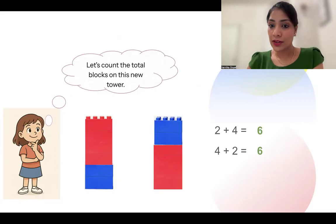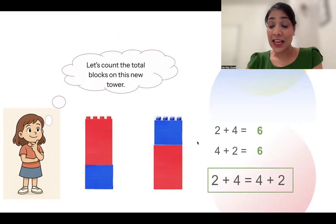What do we see here? That the total sum is the same. That means switching the order of addends actually did not change the sum. Fantastic. This can be written as 2 + 4 is same as 4 + 2. Simple, right? This is actually the commutative property.